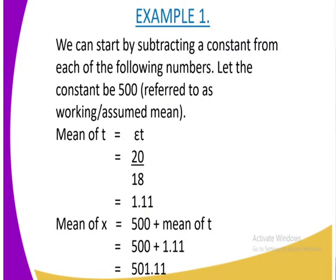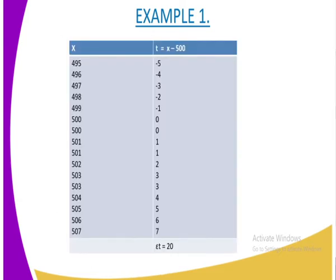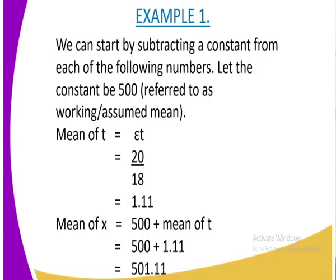In general, you just get an assumed mean — in our case it was 500. The reason to use an assumed mean is to ease your work, because working with these big figures directly can be too large. You choose a number or figure that is close to the figures being given.